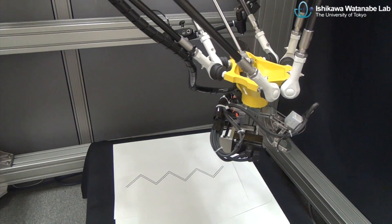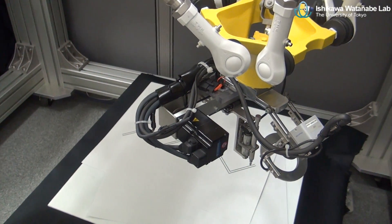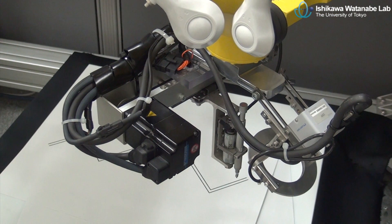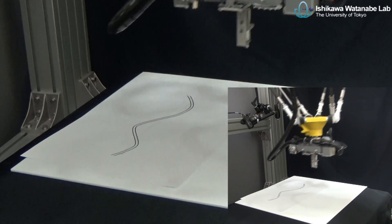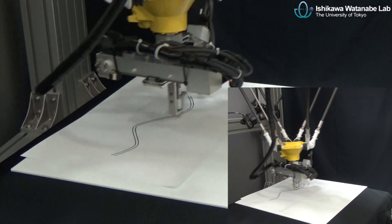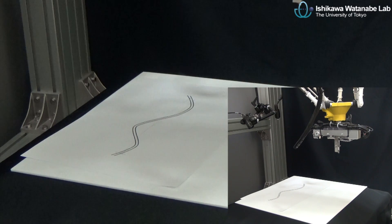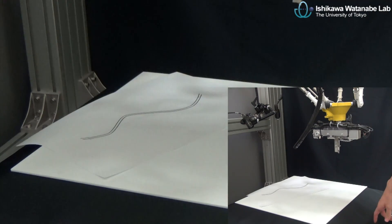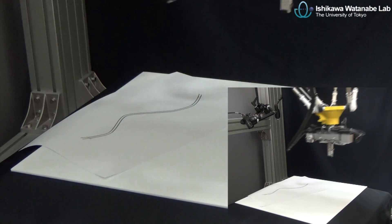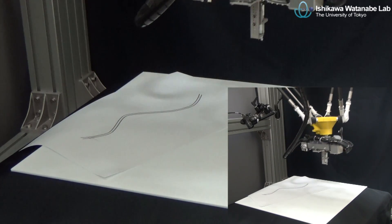Then, during the execution of the main robot's course motion, the add-on module conducts fine compensation under 1000 Hz visual feedback. With this approach, high-performance, fully automatic robotic tracking of unknown contour patterns can be realized, even under systematic uncertainties such as backlash of the main robot or external disturbances of the workpiece.